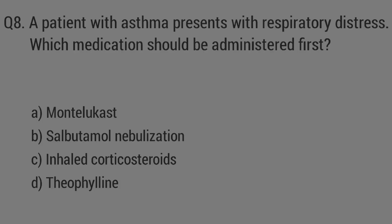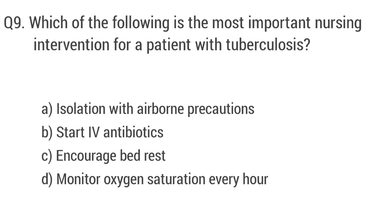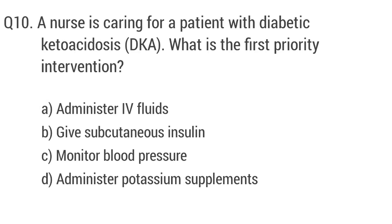Question number nine. Which of the following is the most important nursing intervention for a patient with tuberculosis? The right answer is option A: isolation with airborne precautions.